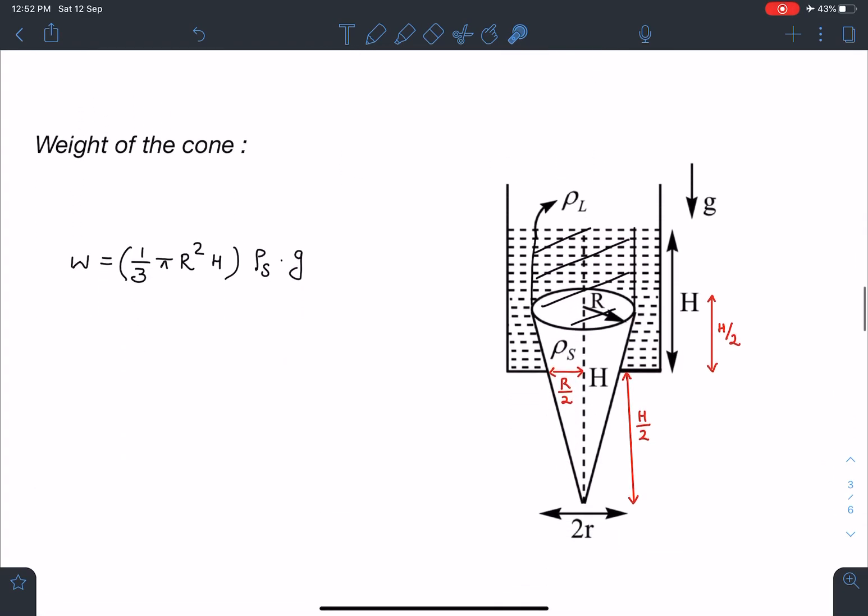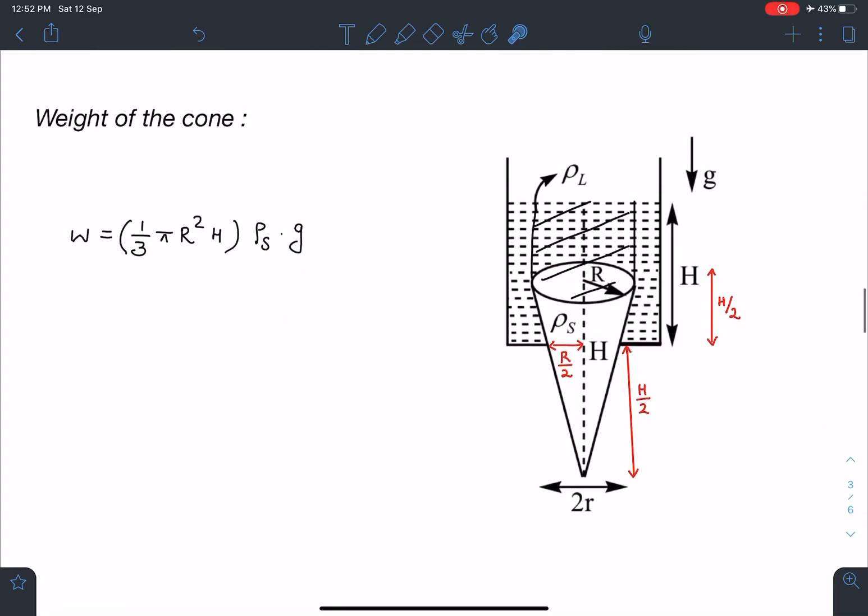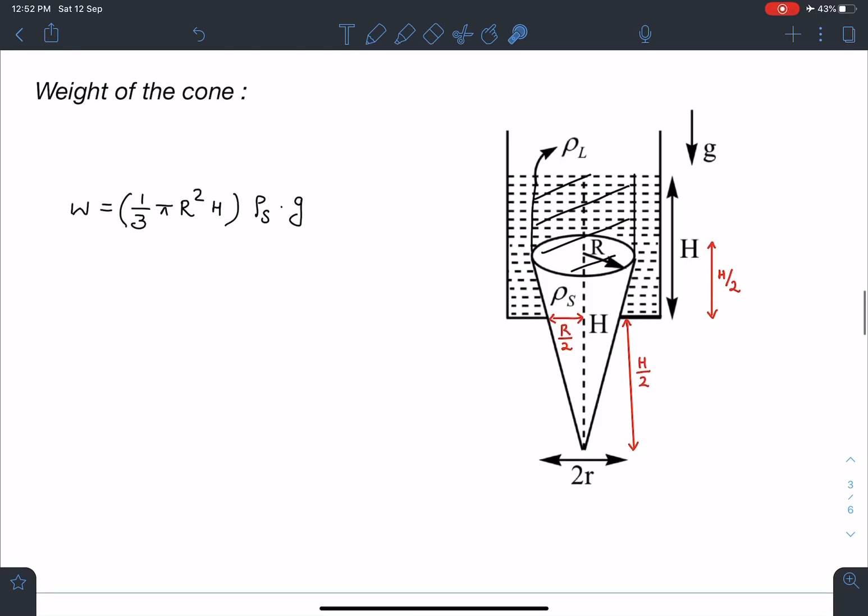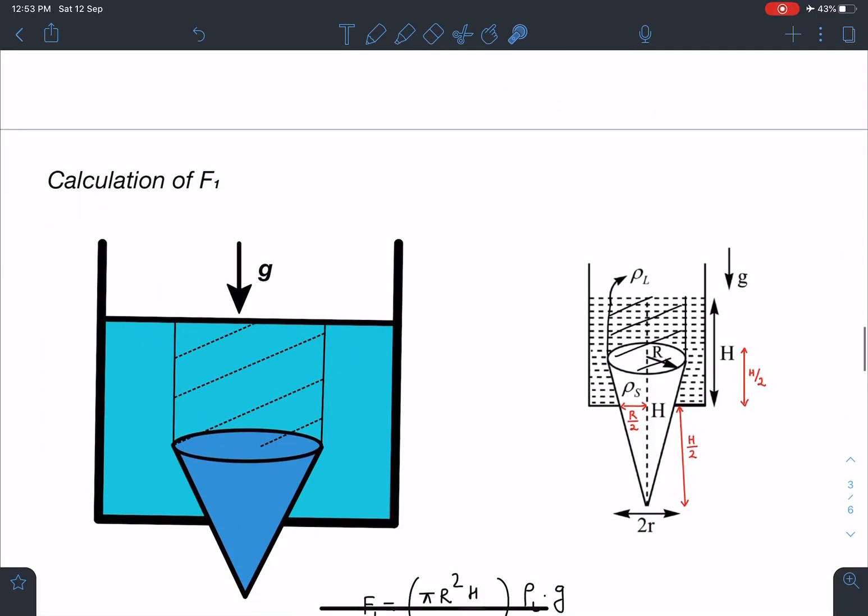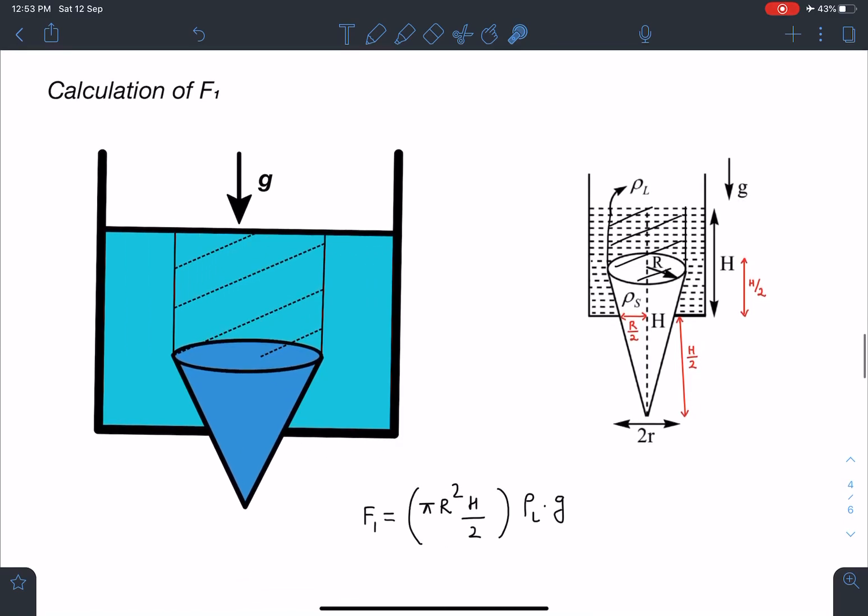So now here, weight of the cone, that is very very simple. Weight is going to be rho solid into g into volume of the cone. That is very straightforward, I can write.